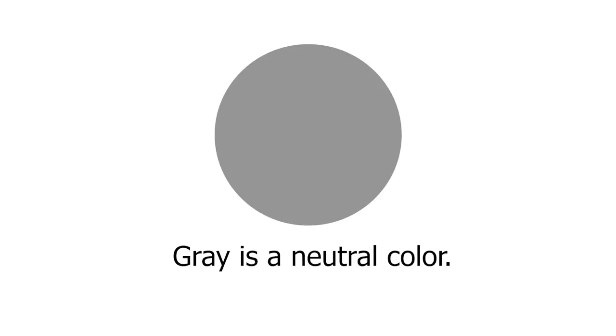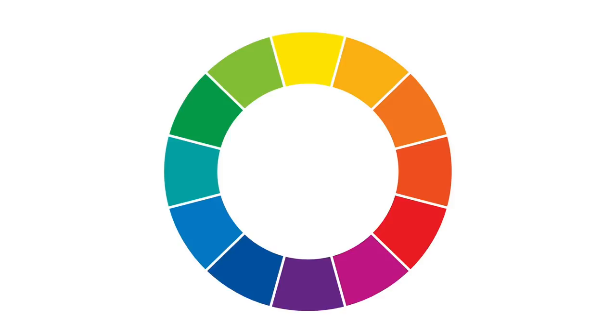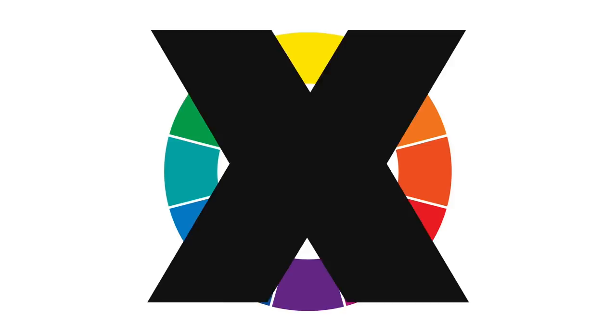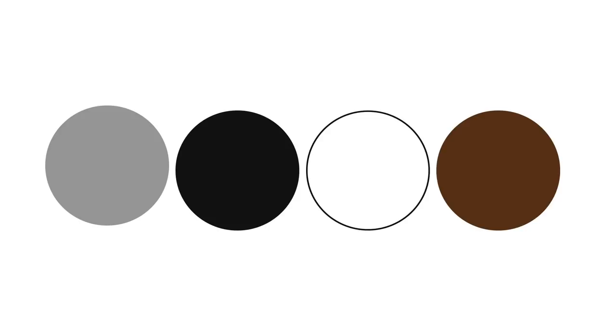Now let's take a look at how color temperature affects the color gray. Gray is considered a neutral color, but it may not be as neutral as you might expect. Neutral colors are not found on the color wheel. Other neutral colors include black, white, and some browns, although most browns lean towards a color such as orange.